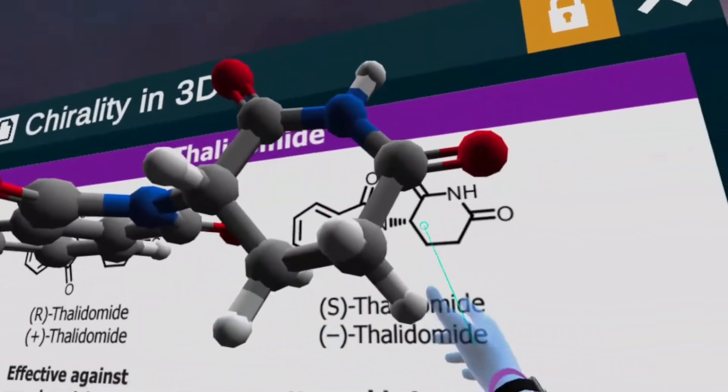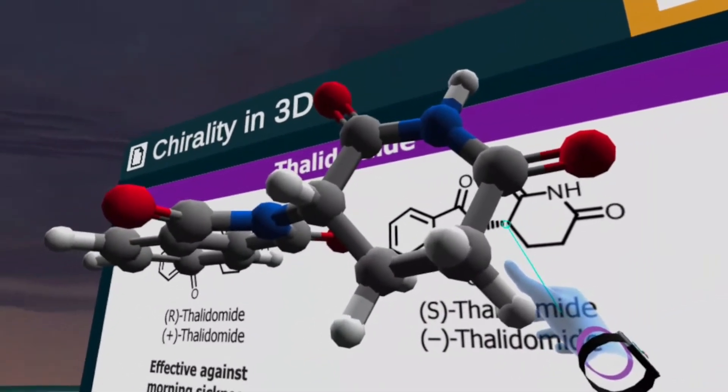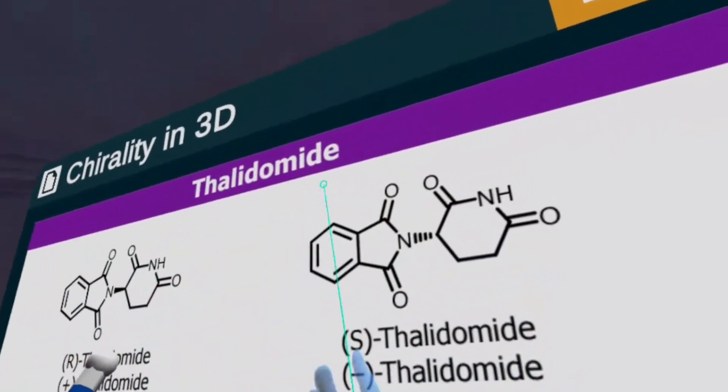So as you can see, the nitrogen is sticking backwards, and the hydrogen is sticking outwards. So this is the S-enantiomer.